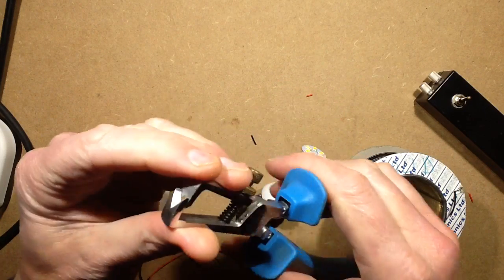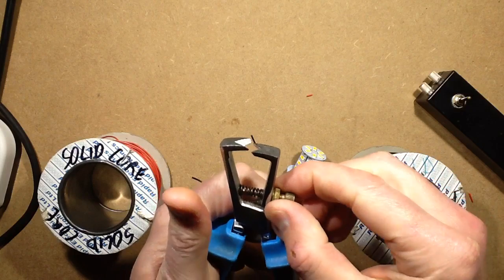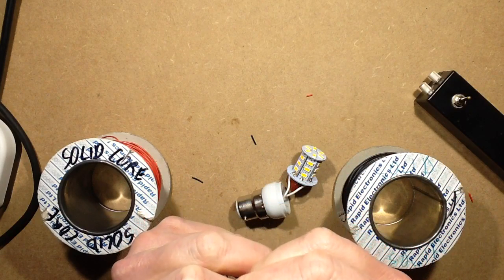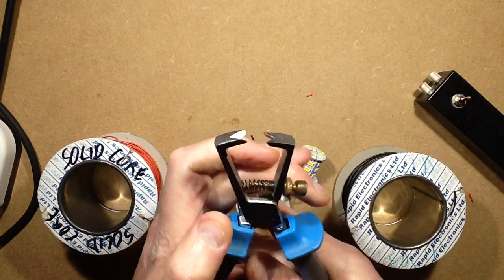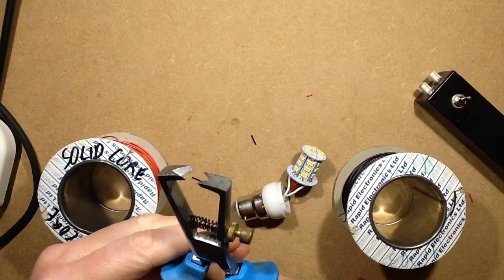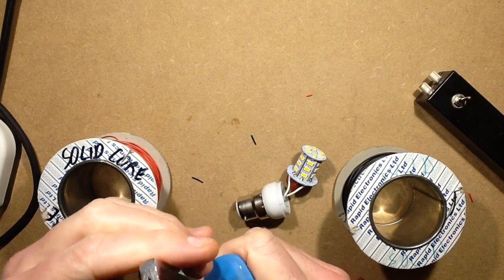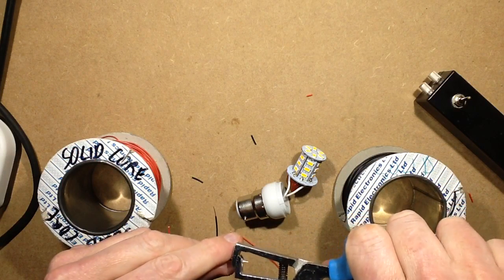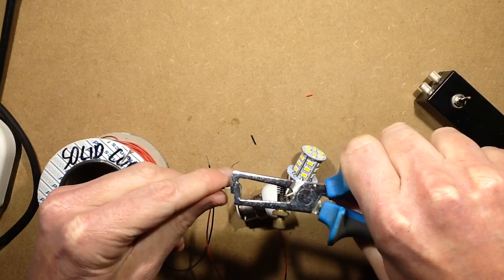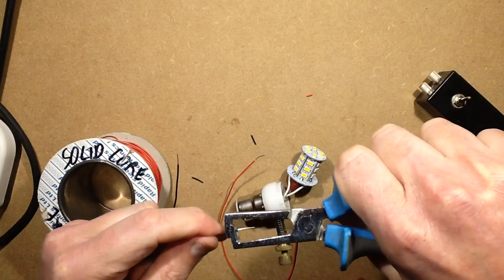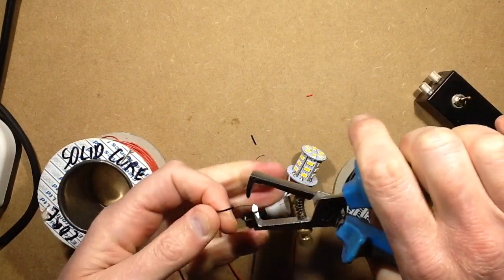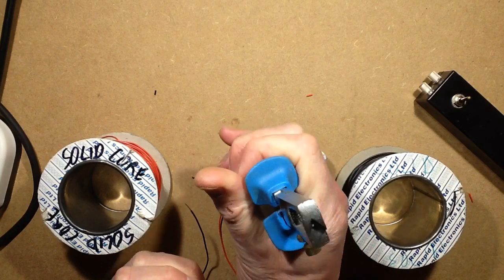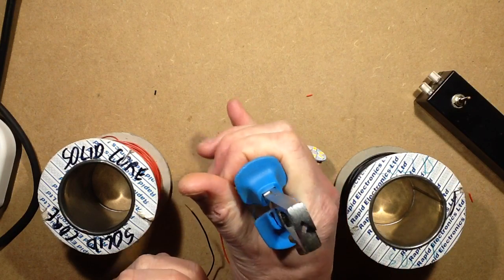And they've got this adjustable thumbscrew that you pretty much lock to the size of the wire you're going to strip. And I have found these to be by far one of the most reliable, consistent ones, because you can set it to the point that it's going to bite down but not bite into the actual wire itself. It purely bites into the insulation and then pulls it off cleanly.